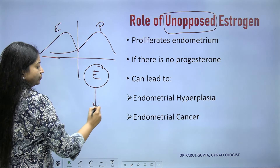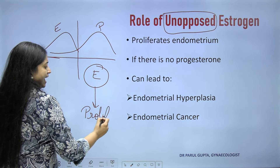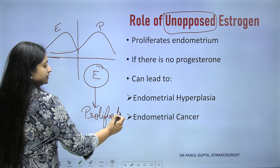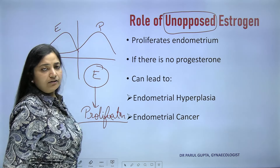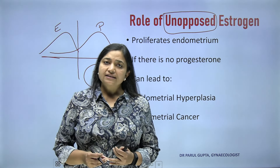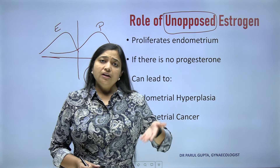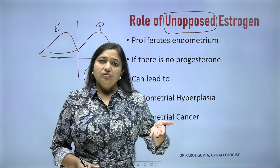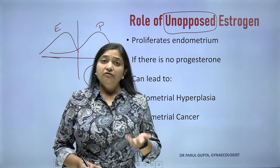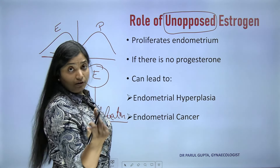First, the role of unopposed estrogen. What do we mean by unopposed estrogen? That means there is no progesterone — either the patient is not having progesterone, or during treatment you are not supplementing progesterone. So what is the action of estrogen? Estrogen is basically a proliferative hormone.